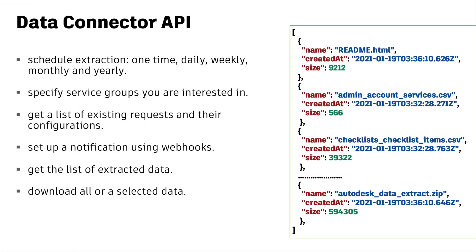In this sample, we use the Forge Data Connector API to create requests and get data of a specific job. With this data, we update the data source of Power BI. Data Connector API also supports a webhook. We can set up our own endpoint to get notification of extraction jobs and process the data when it is ready.